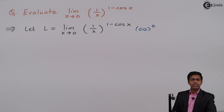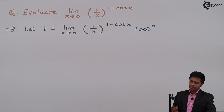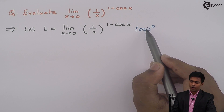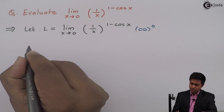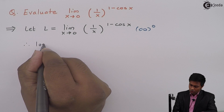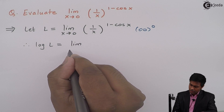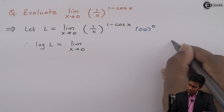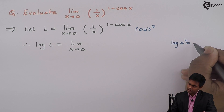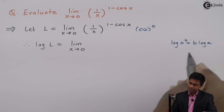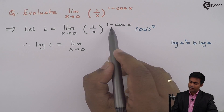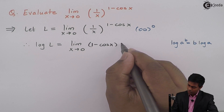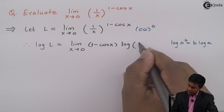To handle this, I will take log on both sides so that infinity raised to 0 will become 0 into infinity — bringing the 0 from the power to the base. So therefore log of L equals limit x tends to 0. Using the property log(A^B) = B·log(A), where A is 1/x and B is (1 minus cos x), we get (1 minus cos x) into log(1/x).